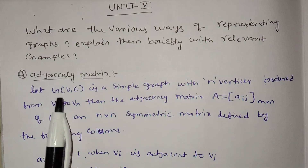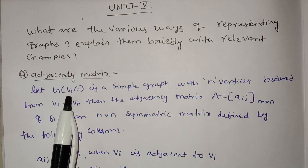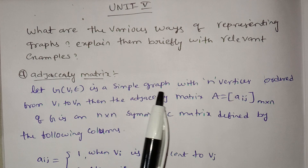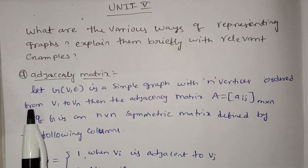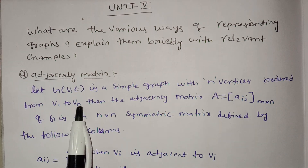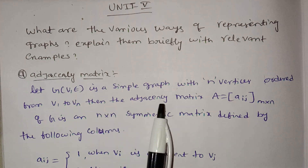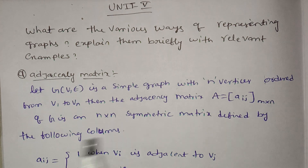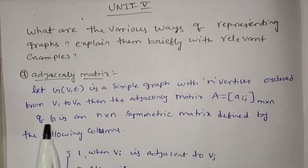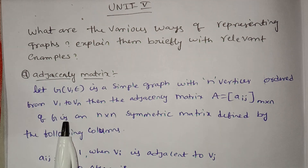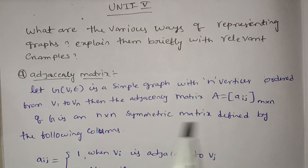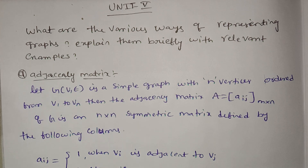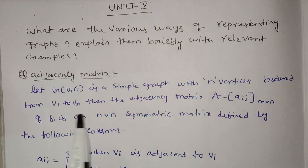Let G be a simple graph with N vertices ordered from V1 to Vn. Then the adjacency matrix A, of size N by N, for graph G is an N by N symmetric matrix defined by its entries Aij.